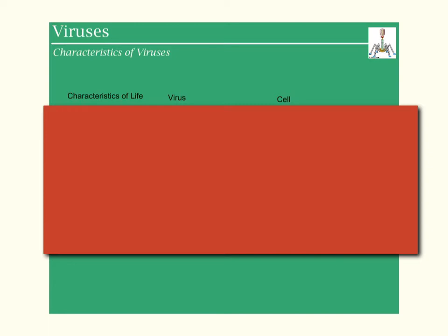Now here's a little chart that I would like you guys to get down. I have three columns I'm going to go through — a characteristic of life and how it varies in a virus and a cell. Because as I mentioned before, viruses are not really alive, and cells are most definitely alive.